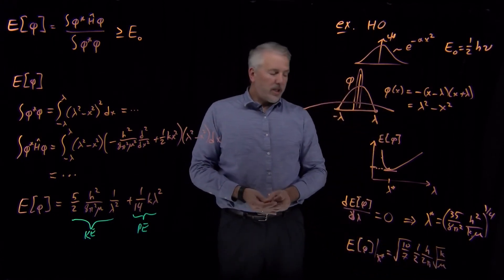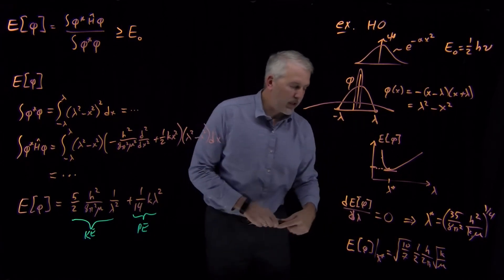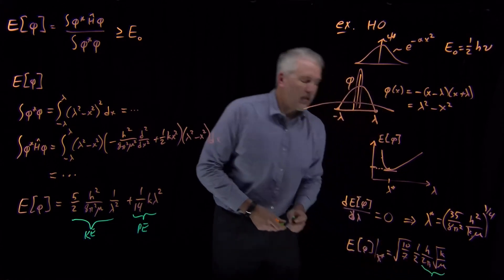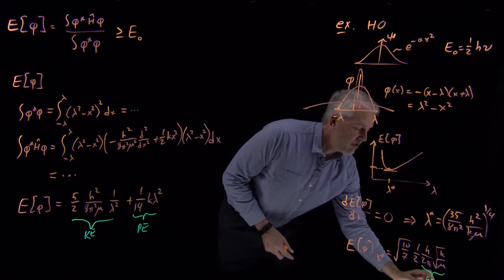So, root 10 over 7, one-half times h over 2 pi root k over mu. And the reason I've written it in that particular way is h over 2 pi root k over mu, that's exactly the same thing as h nu.